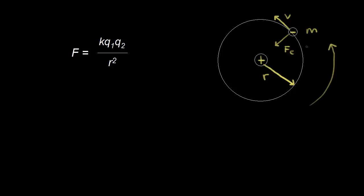We can find the electric force by using Coulomb's Law. Over here on the left, this is Coulomb's Law: the electric force is equal to K, which is a constant, times Q1, which is one of the charges — let's say Q1 is the charge on the proton — times the other charge Q2, which is the charge on the electron, divided by the distance between those two charges squared.